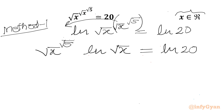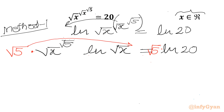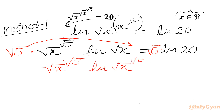Now we will multiply both sides by √5. Using the same log property — ln(a^b) = b·ln(a) — I can bring this power out. So we will be writing our equation as (√x)^(√5) times ln((√x)^(√5)), which will be equal to √5 · ln 20.